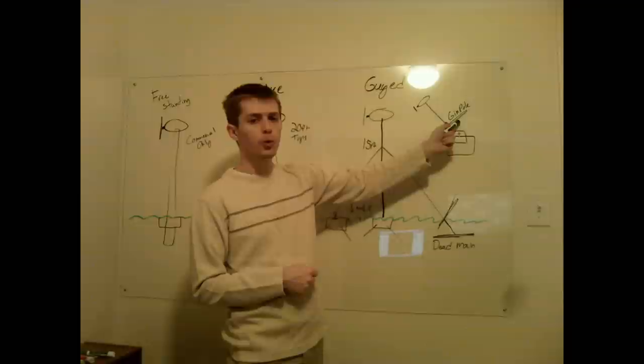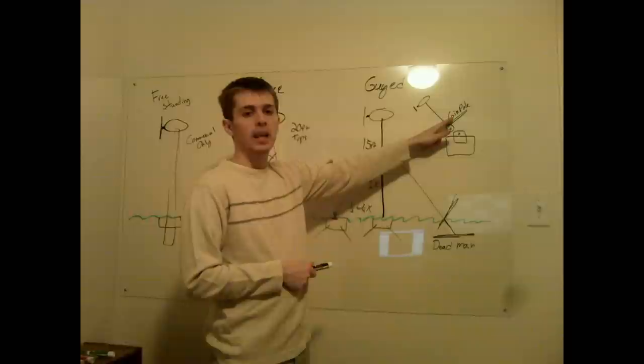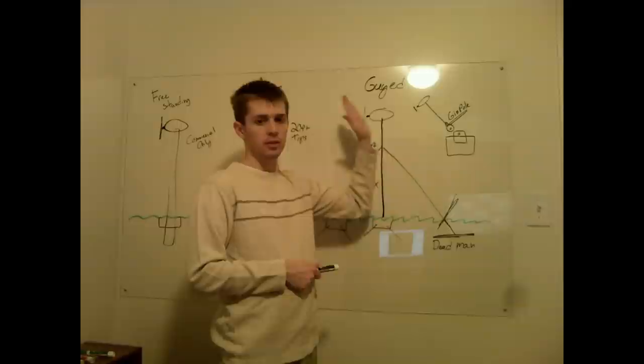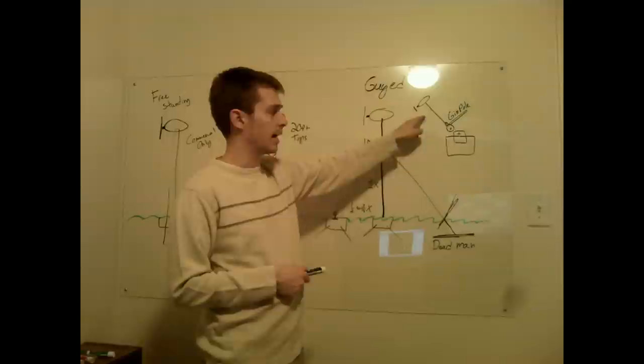An optional tool, particularly for a pivot tower, is to go ahead and put what's called a gin pole. And what this is, this provides leverage as you're raising the tower. It just makes it easier. That way you can pull up and push down on that as opposed to trying to actually pull up and push down on the tower.